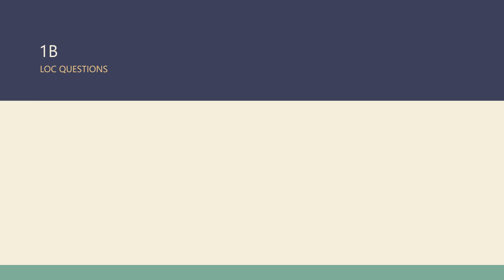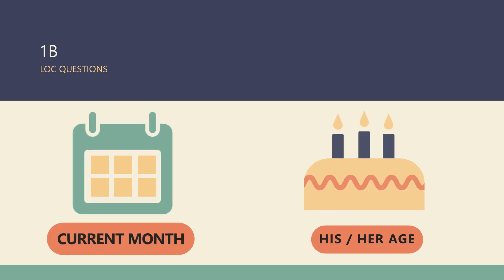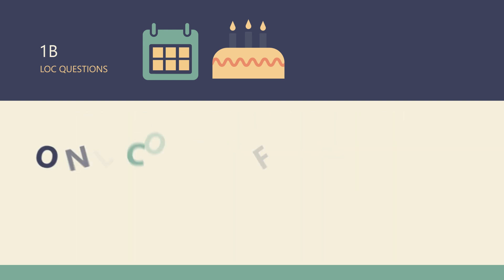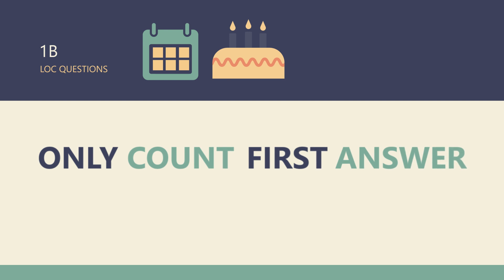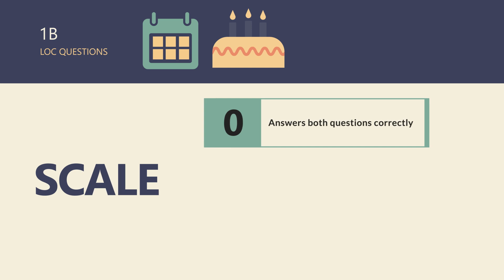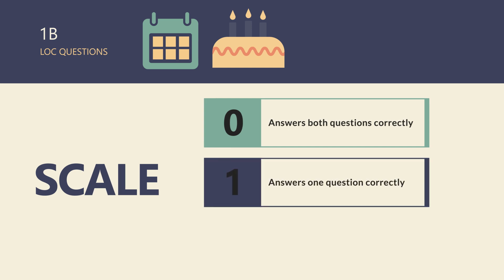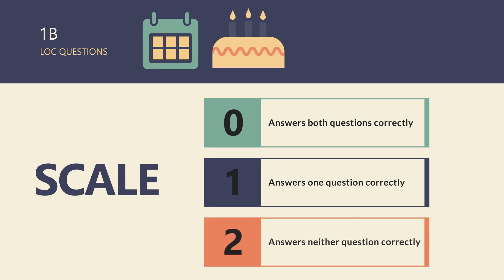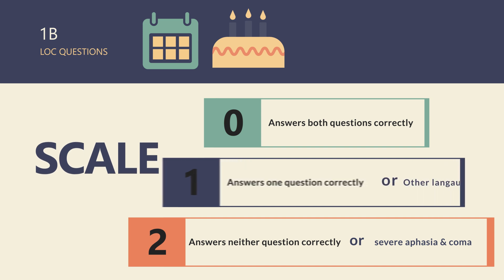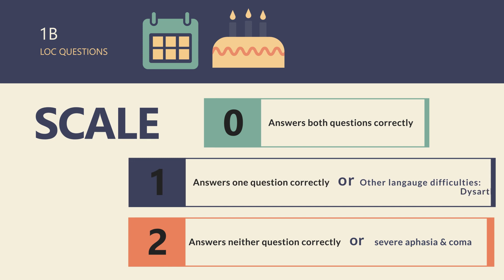The LOC Questions Item 1B is based on the answer to two specific questions. The patient is asked the month and his or her age. The answer must be correct; there is no partial credit for being close. Only count the first answer. A patient that cannot speak is allowed to write the answer. Score 0 if both questions are answered correctly. Score 1 if only one question is answered correctly. Score 2 if neither question is answered correctly, or if the patient is aphasic, stuporous, or does not appear to understand the questions. Patients unable to speak because of endotracheal intubation or orotracheal trauma